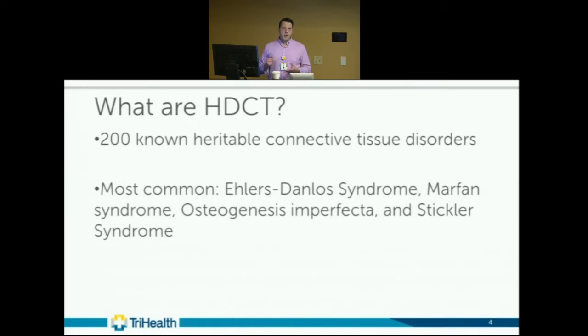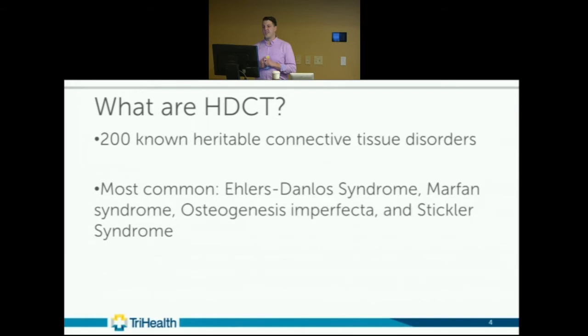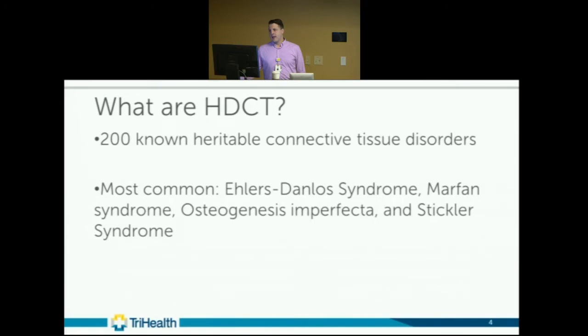So what are heritable disorders of connective tissues? They are mutations in genes that affect tissues within the body — joints, skin, bones, blood vessels, heart, lungs, ears, and eyes. There are about 200 known heritable connective tissue disorders. Most are rare, but not all. The most common include Ehlers-Danlos Syndrome, with hypermobility, skin hyperextensibility, and mitral valve prolapse among the physical exam signs.